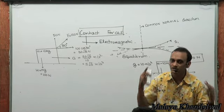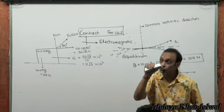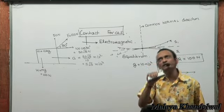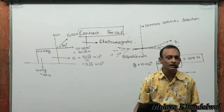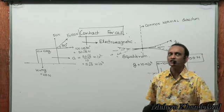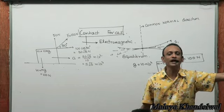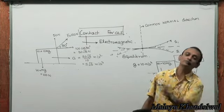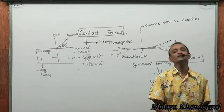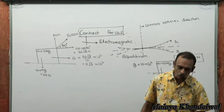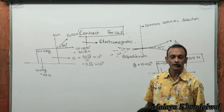If the normal reaction turns out to be zero, that means there is no contact. If R comes out less than zero, that also means there is no contact — R has to always push. So if you get a negative value of R, conclude that R must be zero and there is no contact.